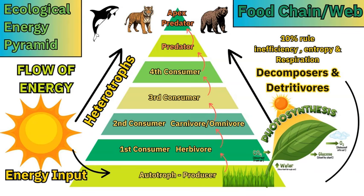The 10% rule shows that in a closed system, energy will not be transferred 100% — that would be unrealistic. When energy is transferred, there's loss through heat, through respiration as the animal lives and uses energy for biological functions, and also through entropy — the tendency of systems to become disorderly. The efficiency of energy transfer is around 10%. So if there are 1,000 kilojoules of energy in the autotroph, the first consumer herbivore — the caterpillar — will only take about 100 kilojoules.